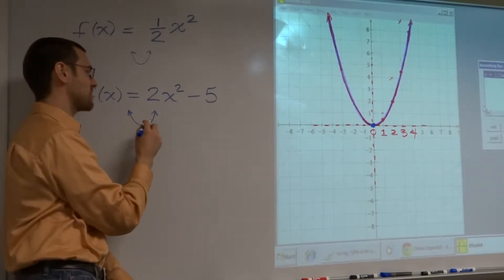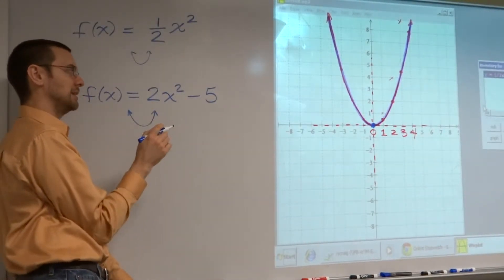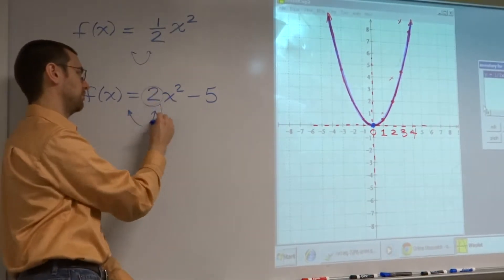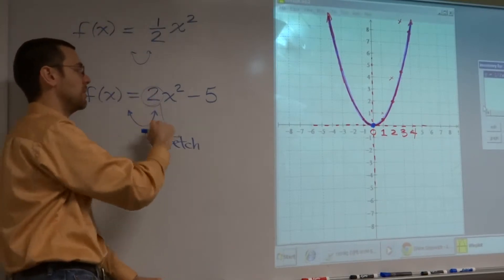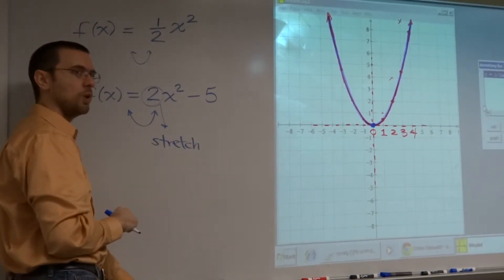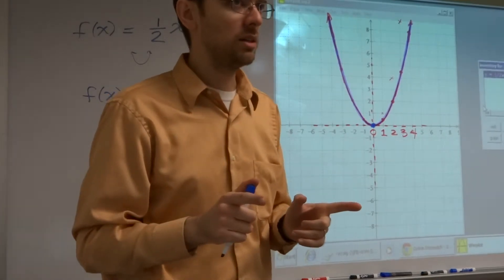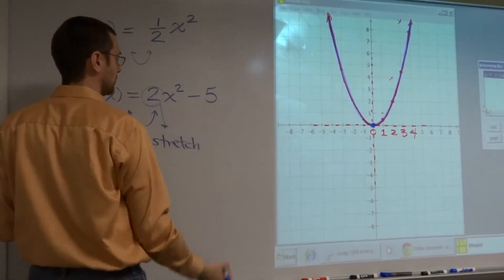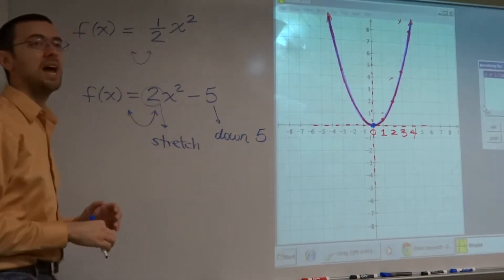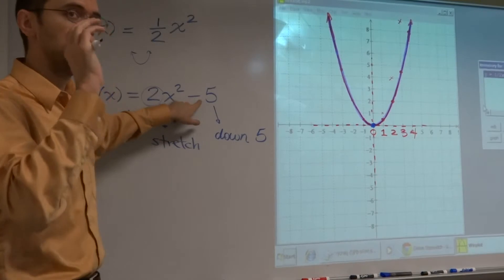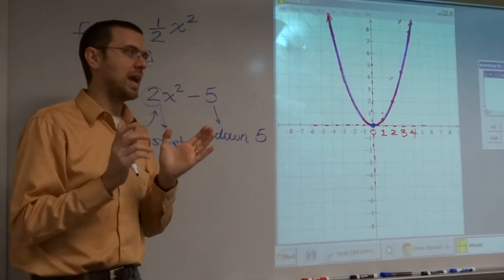What does that coefficient of 2 mean? That means we're going to have a vertical stretch — it's going to be growing vertically faster because of the 2. What about this minus 5? Is this being done inside your squaring function or outside of it? When it's outside, it's a vertical shift, and you do exactly what you see. So that means you're going to go down 5. This minus 5 doesn't apply until after you've done all the squaring stuff — you do the squaring, and then you pull it down 5.